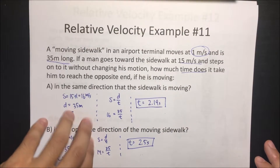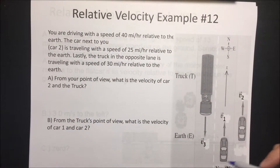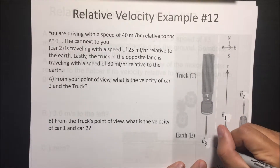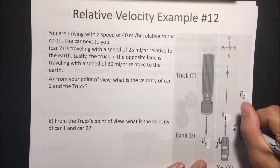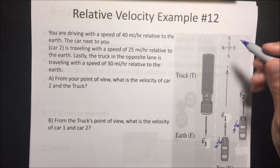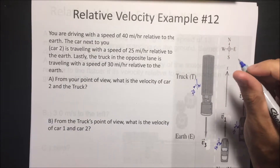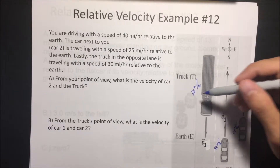Let's look at the next problem. You are driving at 40 miles an hour north. The car next to you is traveling at 25 miles an hour. The truck in the opposite lane is traveling at 30 miles an hour relative to the ground, going in the other direction. From your point of view, what is the velocity of car two? What is the velocity of the truck?